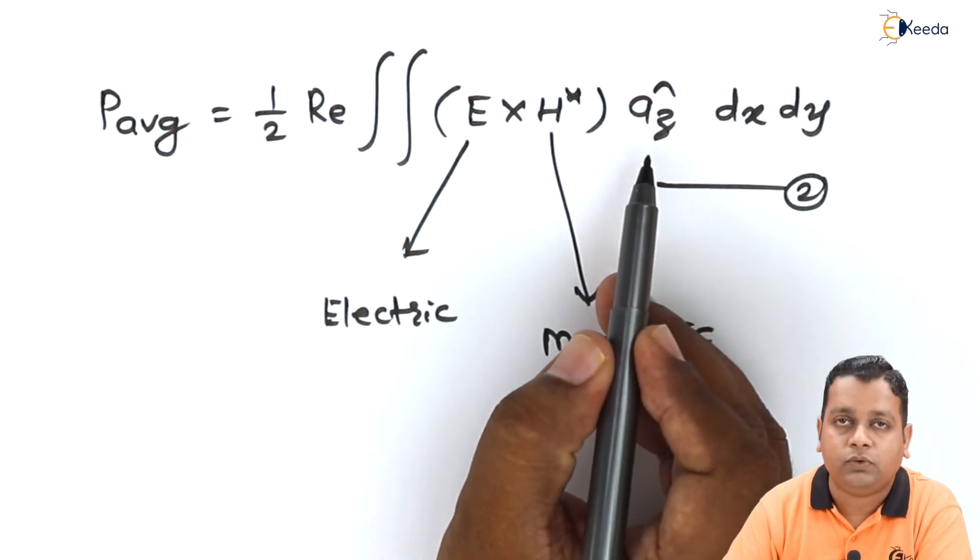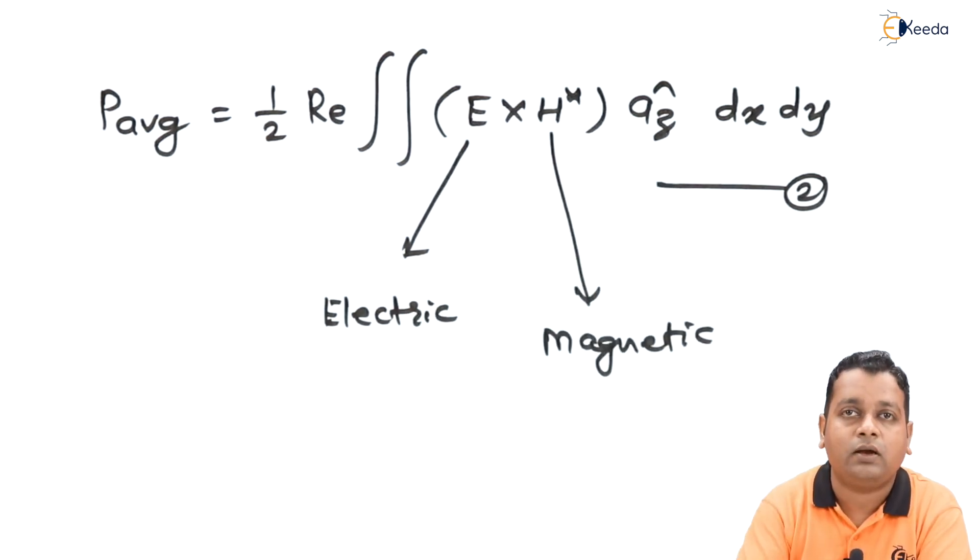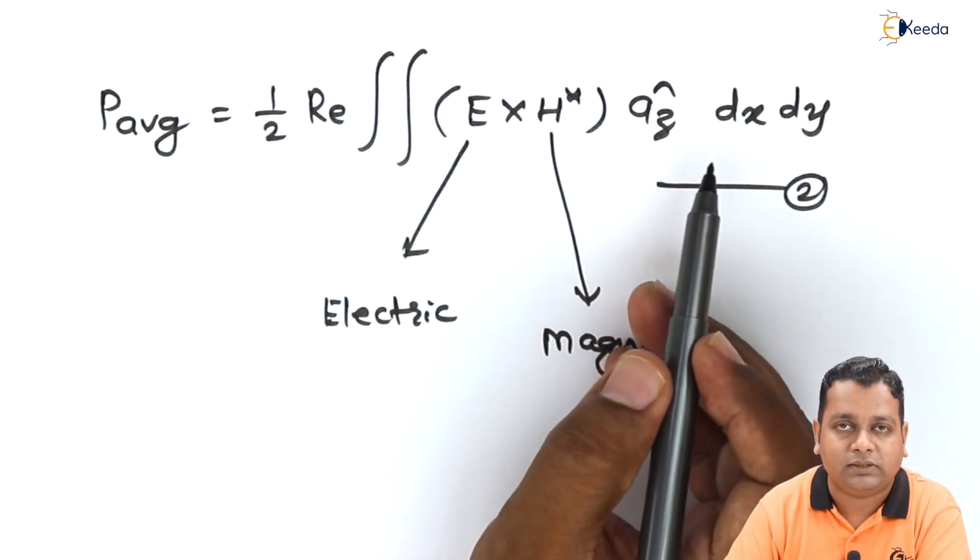Here is the mention of unit vector a_z cap. Unit vector has unity magnitude but the direction along positive z axis.